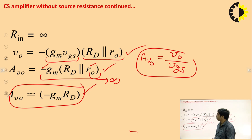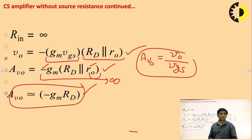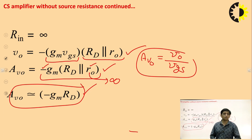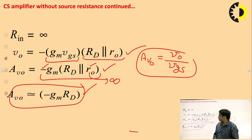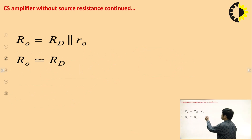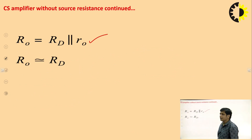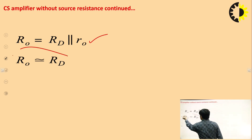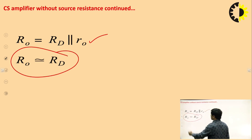In this class, we have calculated three parameters for the common source amplifier using the small signal model. The first is input resistance (ideally infinite), then output resistance (Rd || R0), and voltage gain. If we are ignoring channel length modulation, the output resistance is approximately equal to Rd.